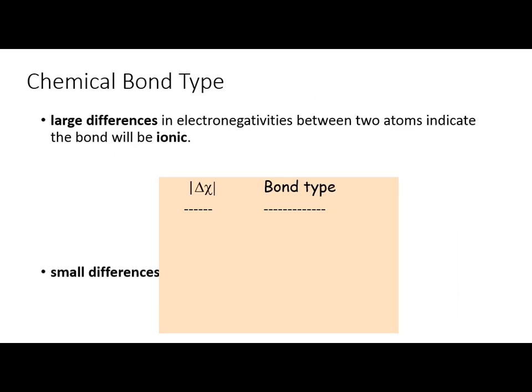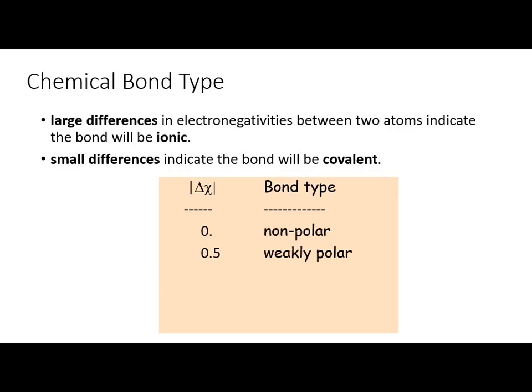This is a review. The threshold for an electron jumping ship is if the higher electronegativity atom, like fluorine at 4.0, is at least 1.7 units higher. If the difference is less than 1.7, the electron won't be fully transferred, but the atom with higher electronegativity will carry a partially negative charge.